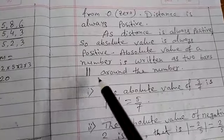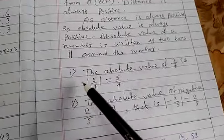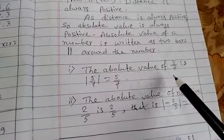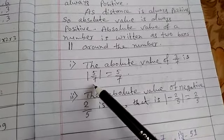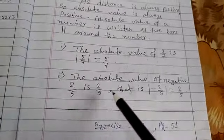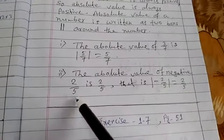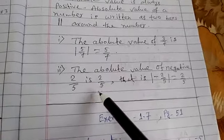Absolute value of a number is written as two bars around the number. The absolute value of 3/7 is 3/7. The absolute value of -5/7 equals 5/7. The absolute value of -2/5 is 2/5.